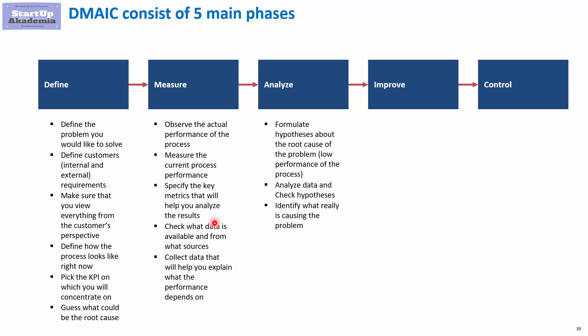In the Analyze stage, you formulate a hypothesis — or rather confirm the things you have defined in the Define stage. Using the data gathered in the Measure phase, you try to see whether certain things are impacting the performance of the process. As a result of this stage, you should have a list of root causes confirmed by the data.